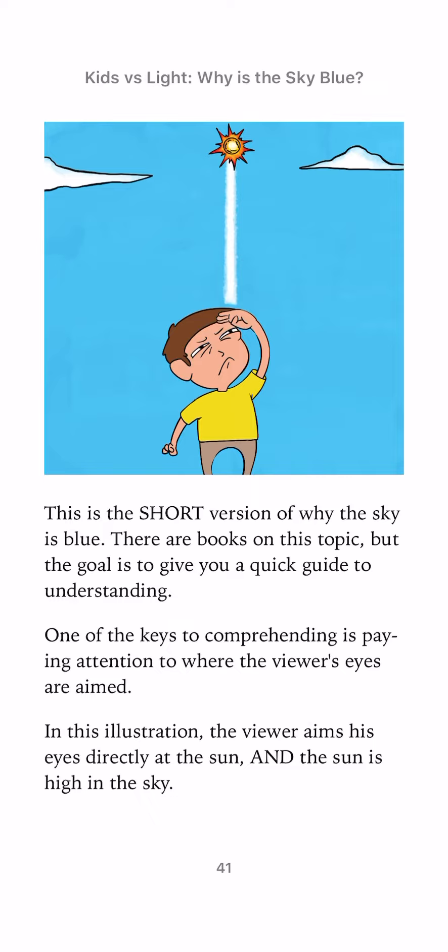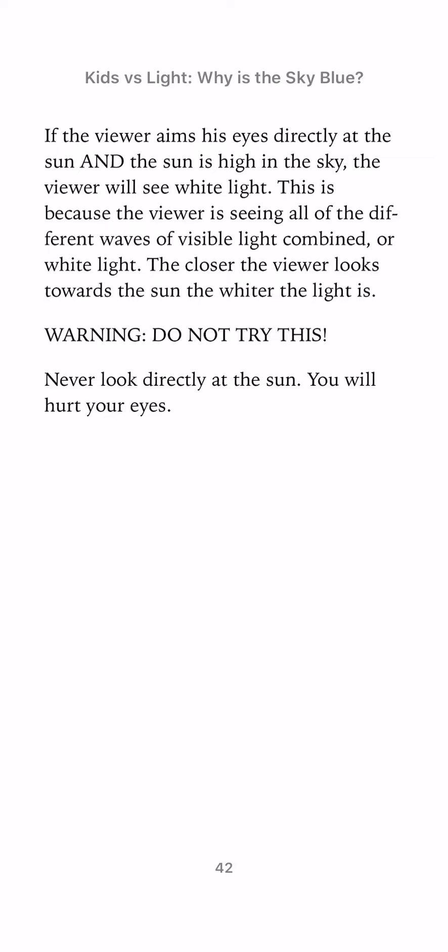One key to understanding is paying attention to where the viewer's eyes are aimed. In this illustration, the viewer aims his eyes directly at the Sun, and the Sun is high in the sky. The viewer will see white light, because he is seeing all of the different waves of visible light combined.